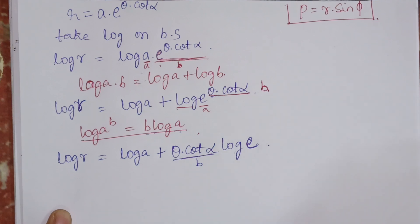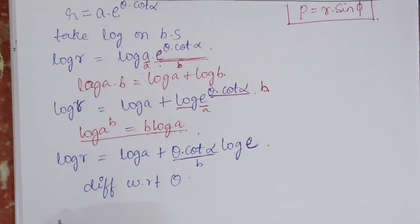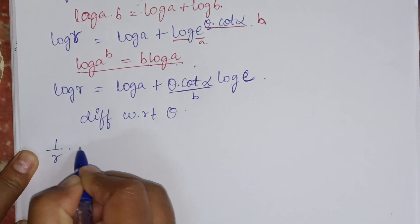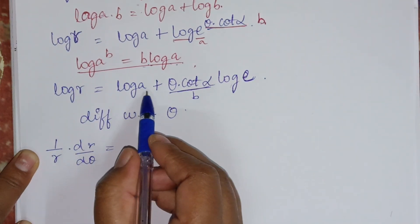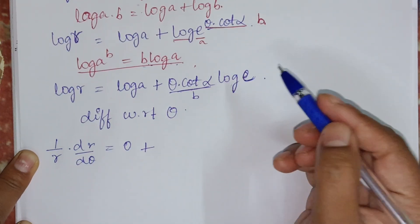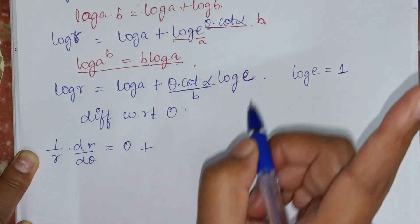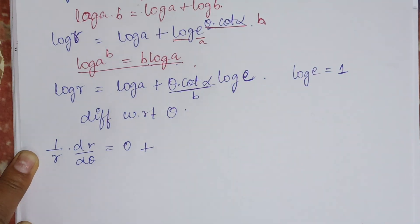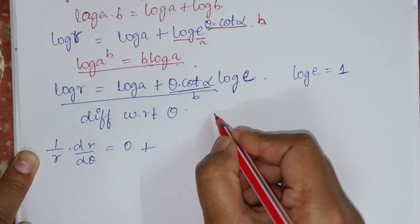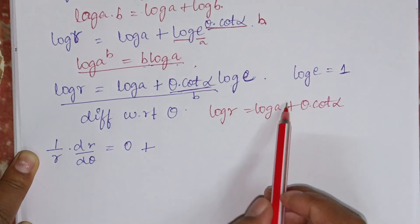The complete expansion is done. So we will differentiate with respect to theta. The simplified equation can be rewritten as: log R equals log A plus theta into cot alpha. This is the equation we are differentiating.